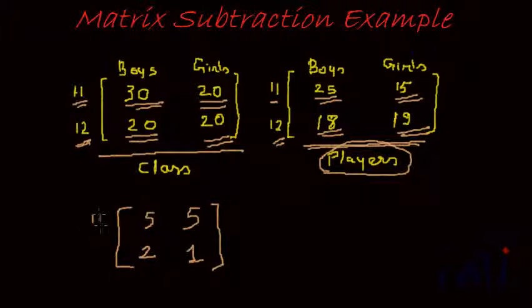So the result would be something like this. There are 5 boys in class 11 who do not play any game and there are 5 girls in class 11 who do not play any game. Similarly, there are 2 boys in class 12 who do not play any games and there is 1 girl in class 12 who does not play any games. This in effect is the meaning of matrix subtraction.